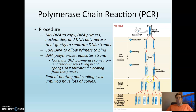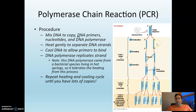You heat to separate, cool to allow the primers to attach, then allow DNA polymerase to do its thing. Two strands become four, four become eight, eight become sixteen, sixteen become thirty-two, and pretty soon you've got a lot of copies. Interestingly, the DNA polymerase enzyme used actually came from a bacterial species that lives in hot springs — that's how it survives the heating. Otherwise, it would denature just like any other enzyme.